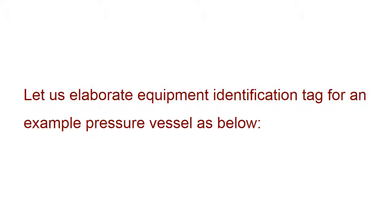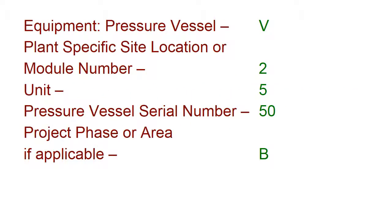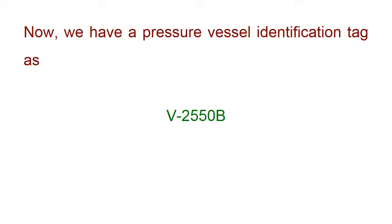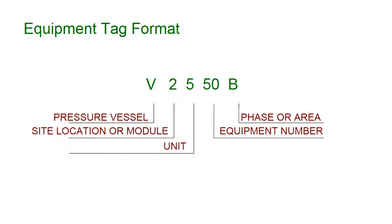Let us review the equipment identification tag for an example pressure vessel. Equipment: Pressure Vessel, Plant Specific Site Location or Module No.: 2, Unit: 5, Pressure Vessel Serial No.: 50, Project Phase or Area if applicable: B. We therefore get a pressure vessel identification tag of V-2550B. The tag format is: V for Pressure Vessel, 2 for Site Location or Module, 5 for Unit, 50 for Equipment Number, B for Phase or Area.